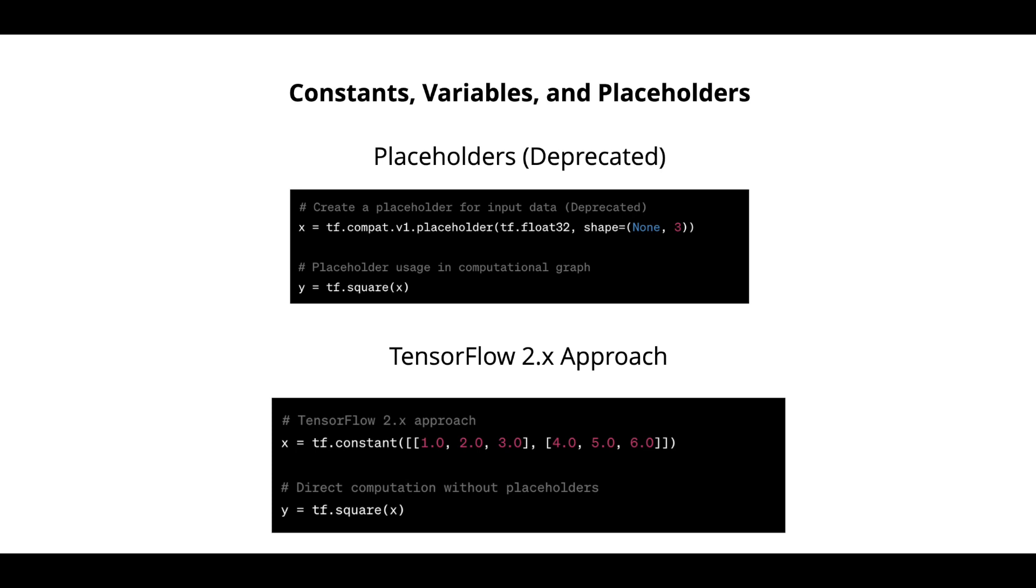Example, here is a deprecated version though. You can just look at this for knowledge. So creating a placeholder for input data, you say x equal to tf.compat.v1.placeholder and you give the tf.float32 type and shape equal to none, 3.